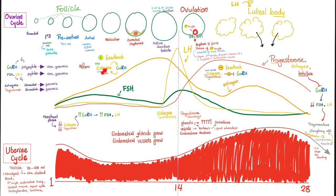Estrogen will boost the formation of FSH and LH. FSH and LH will grow the follicle, rupture the follicle, etc. Estrogen on the endometrial lining increases the growth of endometrial glands and endometrial blood vessels.